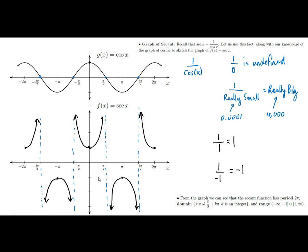The secant graph can never be between -1 and 1. The reason is that the cosine is always between -1 and 1, and when you take 1 divided by numbers that are less than 1 in absolute value, you always get numbers bigger than 1 in absolute value. That's just extending the principle that 1 divided by something really small is really big.